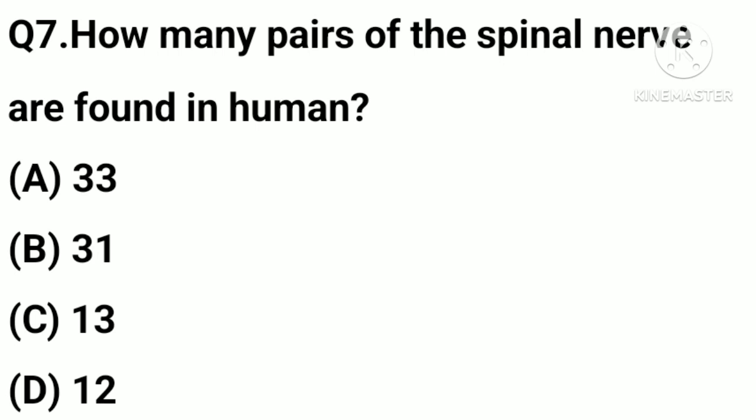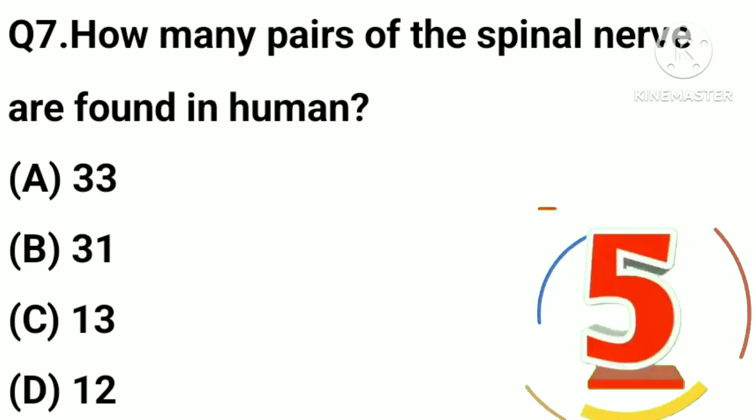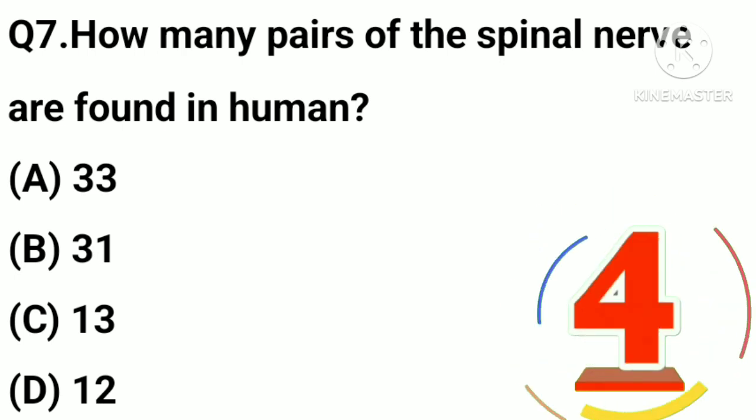How many pairs of spinal nerves are found in humans? Option A, 33; B, 31; C, 13; D, 12.